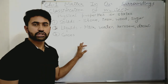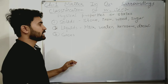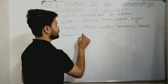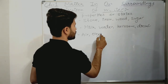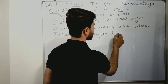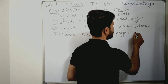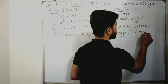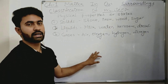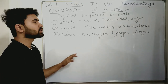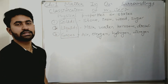Whereas oxygen, hydrogen, nitrogen, and air are the gaseous forms of matter. So matter can be classified into three types: solids, liquids, and gases.